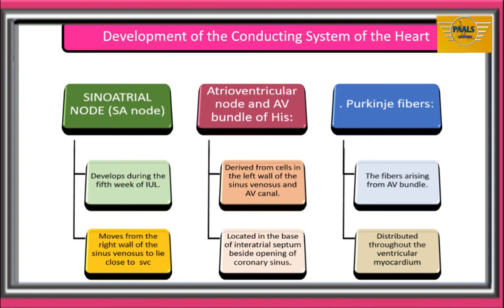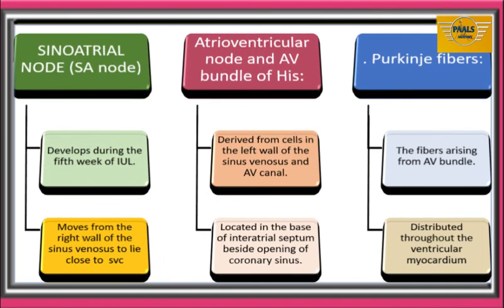The conducting system of the heart is made up of four components: the SA node, AV node, bundle of His, and Purkinje fibers. The sinoatrial node develops during the fifth week; initially located in the right wall of the sinus venosus, it will later lie near the opening of the superior vena cava in the right atrium. The atrioventricular node and AV bundle of His are derived from cells in the left wall of the sinus venosus and AV canal, located at the base of the interatrial septum just anterior to the opening of the coronary sinus. The Purkinje fibers arise from the AV bundle, and their branches are distributed throughout the ventricular myocardium.